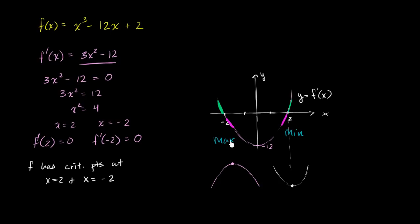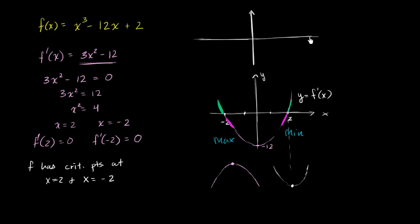With that out of the way, can we use this intuition to sketch the graph of f of x? Let's try to do it — it's just going to be a sketch, not very exact, but it'll give us a sense of the shape. So: x-axis, y-axis, critical point at x equals positive 2, and critical point at x equals negative 2.